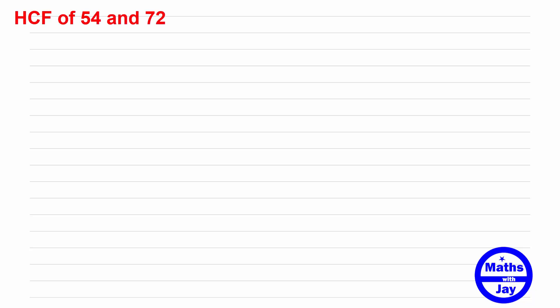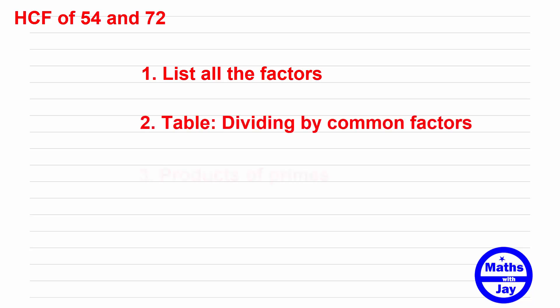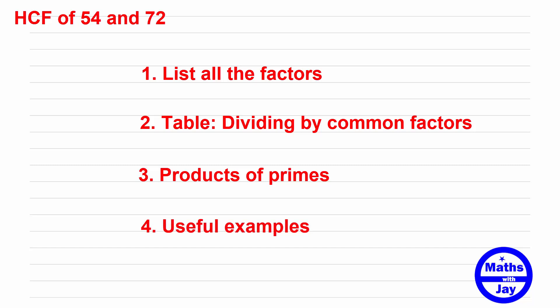We're going to look at the highest common factor of 54 and 72. There are many ways of doing this — in this video we'll look at three ways. First we'll look at the method that really shows you what we're doing, then the method which is probably the simplest one, then one that involves using the prime factors of each number. We'll also look at why this is useful with an arithmetical example and an algebraic one.